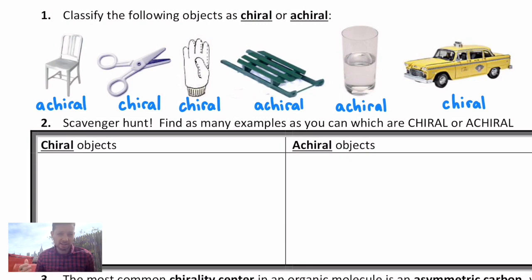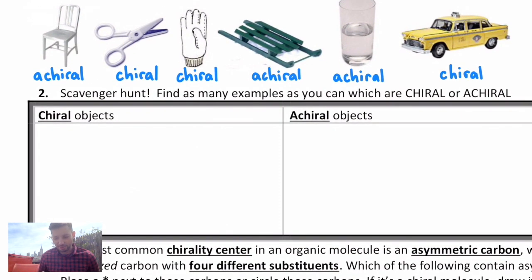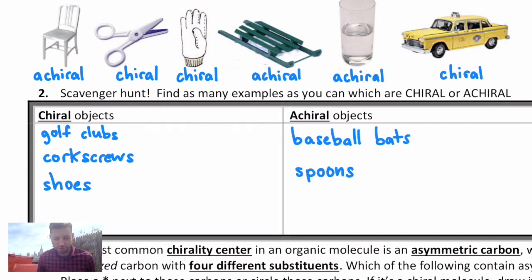We can apply this to any number of objects. If we were together in person, I would have you scavenger hunt for chiral objects and achiral objects around you just to fill in some blanks. Golf clubs, corkscrews, shoes, those are all things that are handed and chiral as opposed to baseball bats, spoons, and simple t-shirts could be examples of things that are achiral.